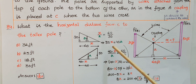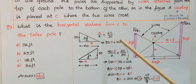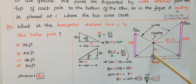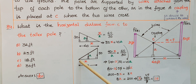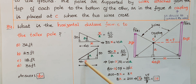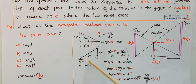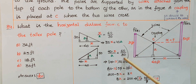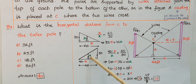Looking at the other pair of triangles — this triangle and this small triangle — these two are also similar because both have 90-degree angles and share a common angle. So the corresponding side ratios are equal: (40 − x)/a = 40/50.